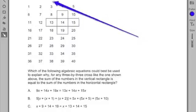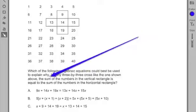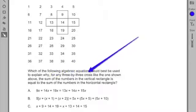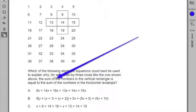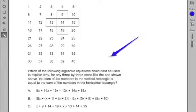Okay, here we go. Number 21. Use the diagram below to answer the question that follows. Which of the following algebraic equations could best be used to explain why, for any 3 by 3 cross like the one shown above, the sum of the numbers in the vertical rectangle is equal to the sum of the numbers in the horizontal rectangle?